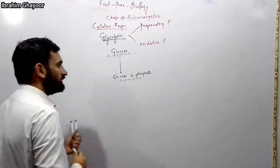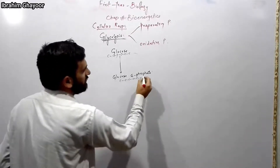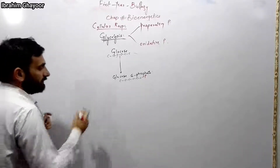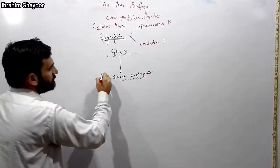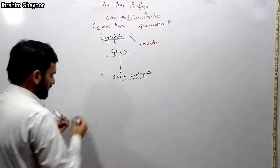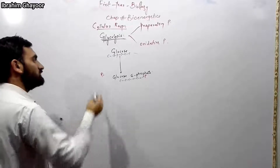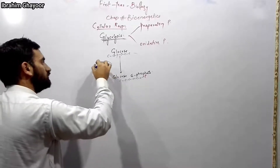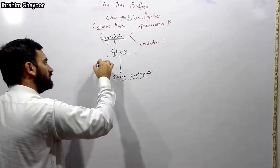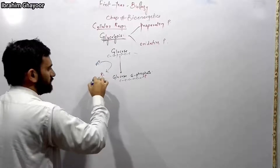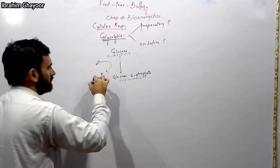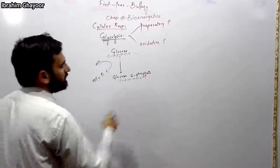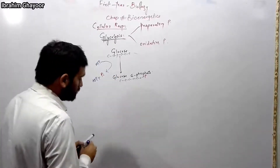In step one, carbon six has a phosphate group. ATP is required here — ATP breaks down, releasing inorganic phosphate, and ADP is formed. The energy from ATP is used to attach the inorganic phosphate to the carbon-6 position of glucose.